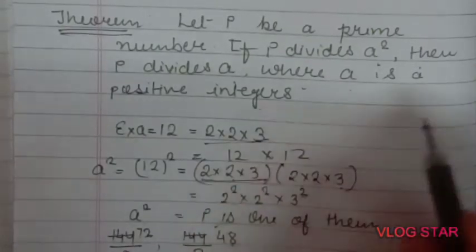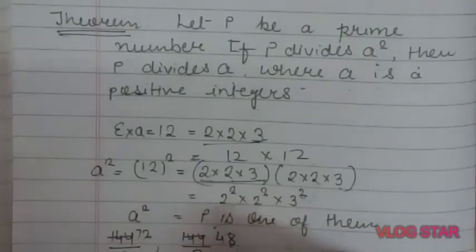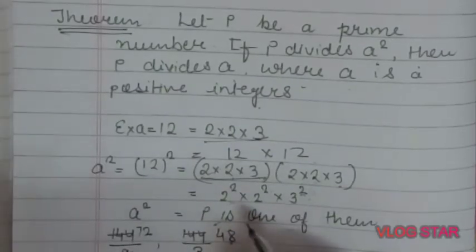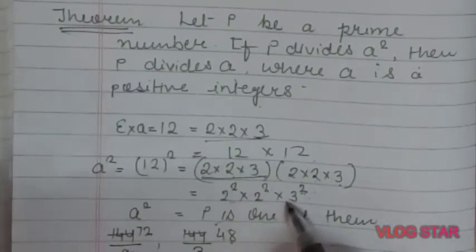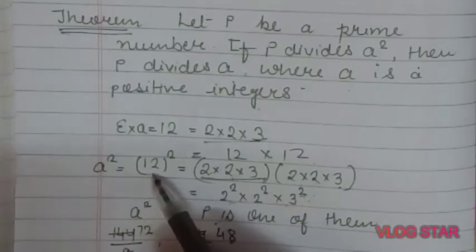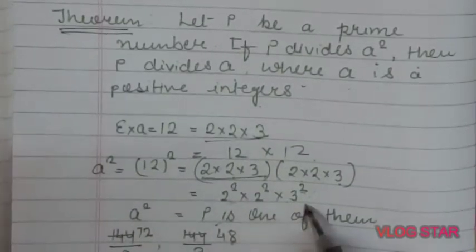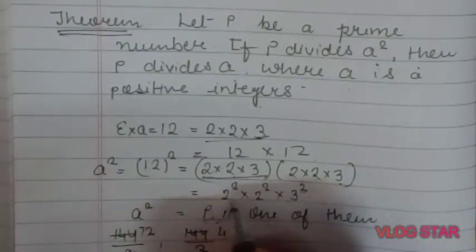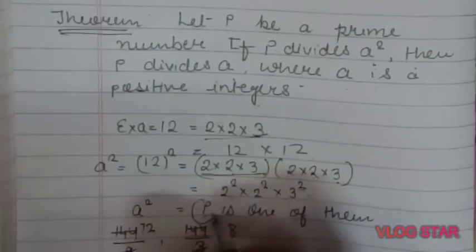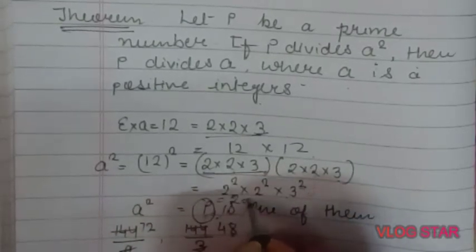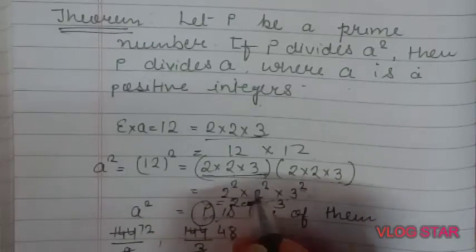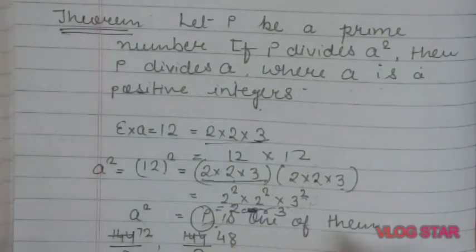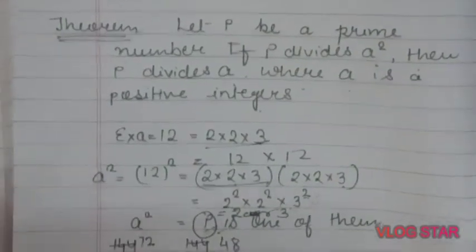Now according to the theorem, p divides a² and p is a prime number. The prime factors here are 2 and 3. So there are two prime numbers: 2 and 3. This means a² = 12 × 12 = 144 can be divided by both prime numbers 2 and 3, and p is one of them.